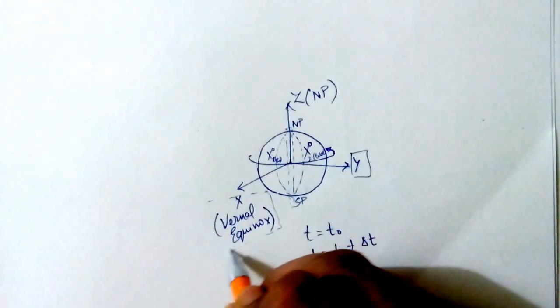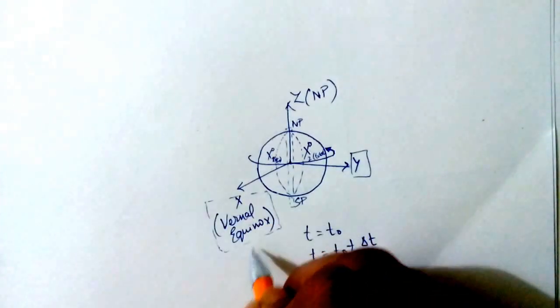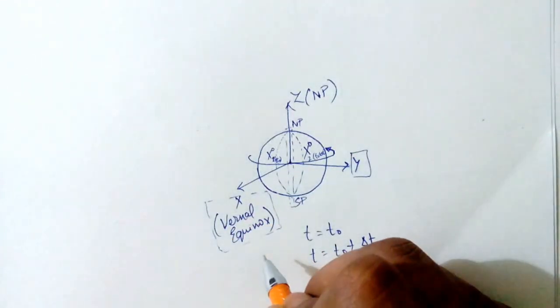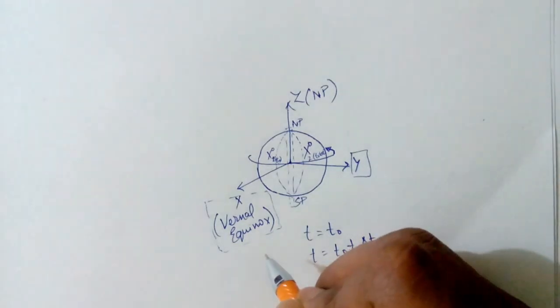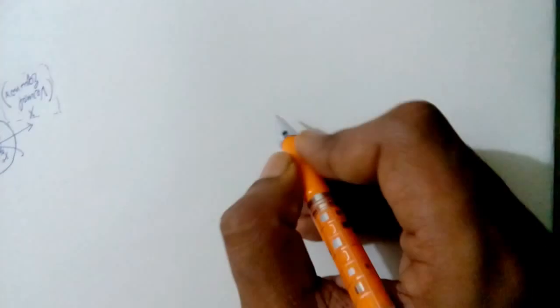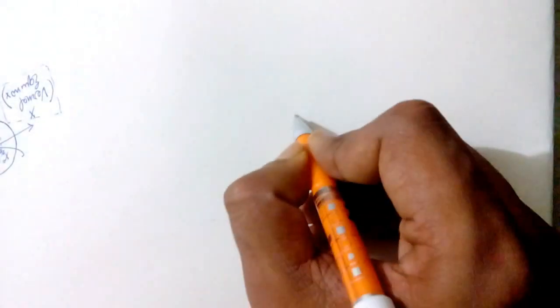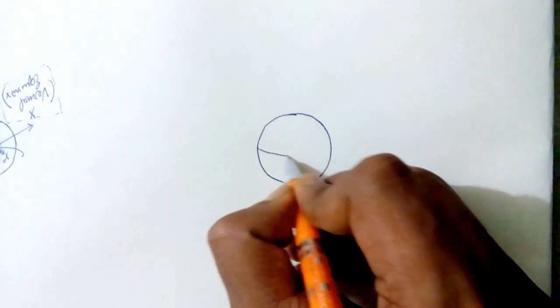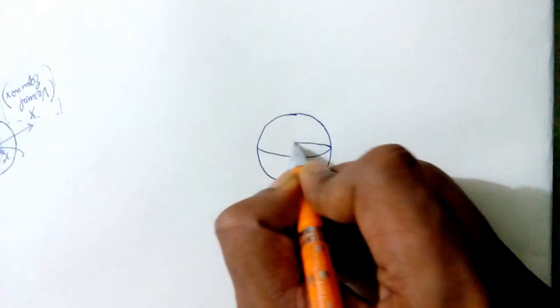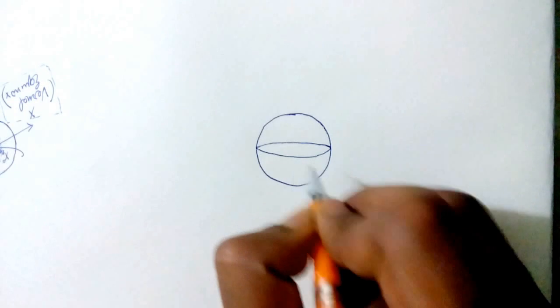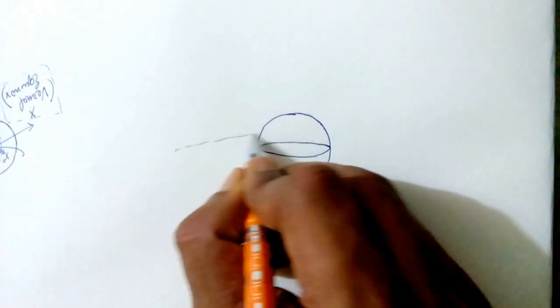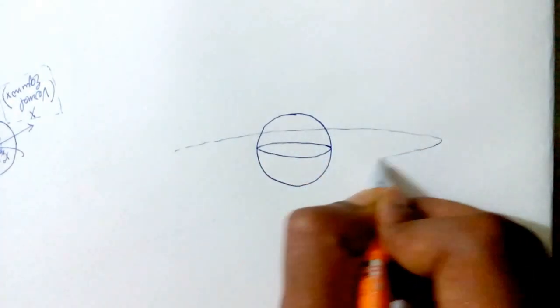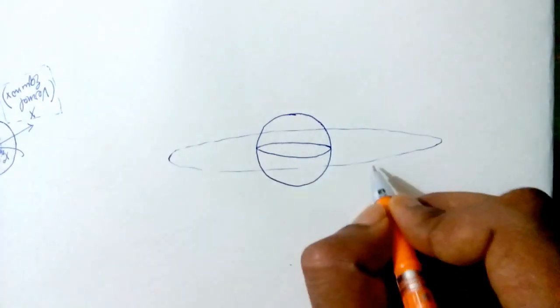So I have been mentioning this word quite frequently: the vernal equinox. So let's see what this vernal equinox is. Suppose this is our Earth. Now this will be our 0 degree latitude, which is the equator. The plane containing the equator is called the equatorial plane.